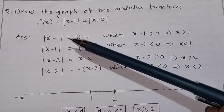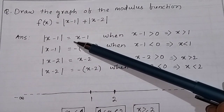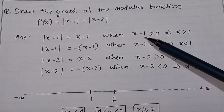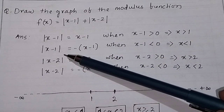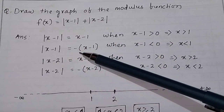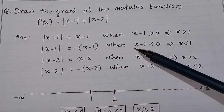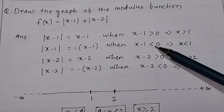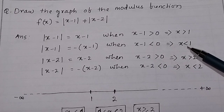For modulus function x minus 1: mod of (x - 1) will be equal to x minus 1 when x minus 1 is greater than 0, i.e., x is greater than 1. And mod of (x - 1) will be equal to minus(x - 1) when x minus 1 is less than 0, i.e., x is less than 1.